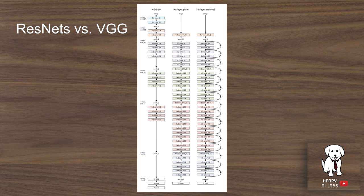This image shows what the ResNet looks like in contrast to a 34-layer plain network, which is a series of convolutional layers followed by activations and batch normalization, and compared to another really popular model, VGG-19.